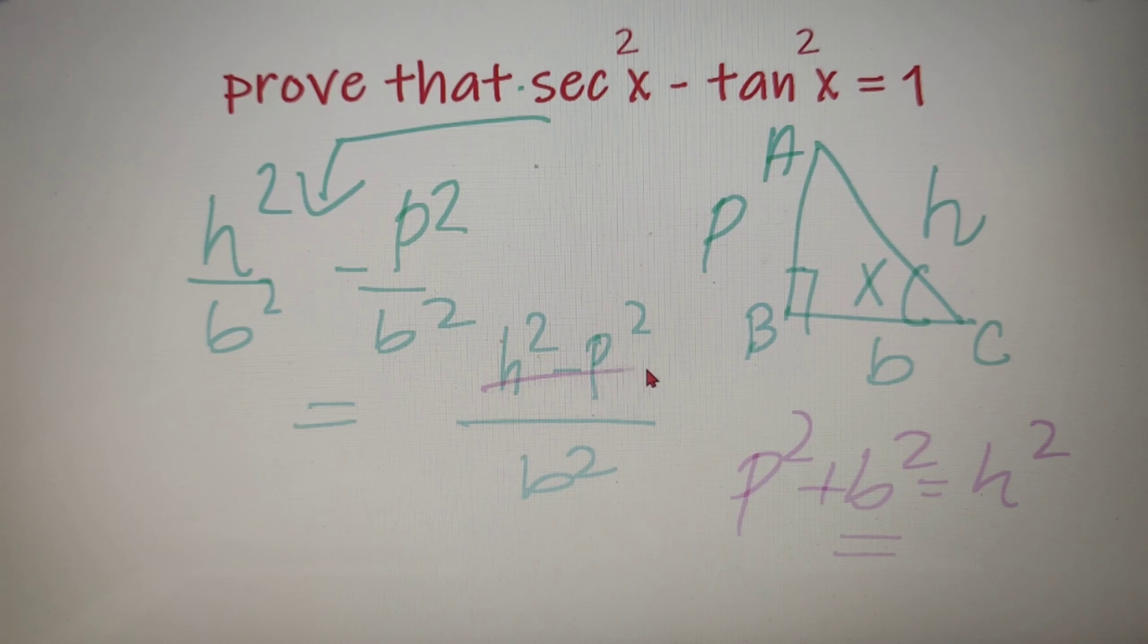Now we can see that h² minus p² is nothing but b². So instead of h² minus p², I can write it down as b². So we can see that we have b² in both numerator and denominator which will get cancelled and we will get our answer as 1. So we have proved that sec²x minus tan²x is nothing but 1.